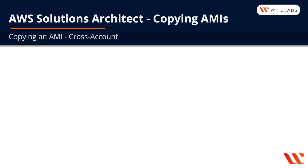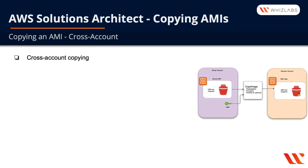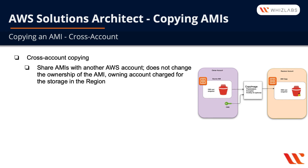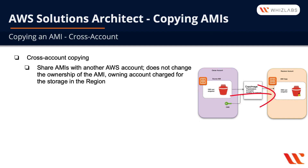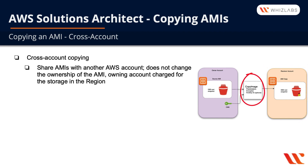Now let's talk about copying AMIs across accounts. With cross-account copying, you can share AMIs with another AWS account, and doing so does not change the ownership of the AMI — the owning account is charged for the storage in the region. In our diagram, the account on the left copies the source AMI to the receiving account on the right using the copy image command with encrypted and KMS key ID parameters. The ownership remains with the owner account, and the owner account is charged for storage in whichever region the receiver account is running.